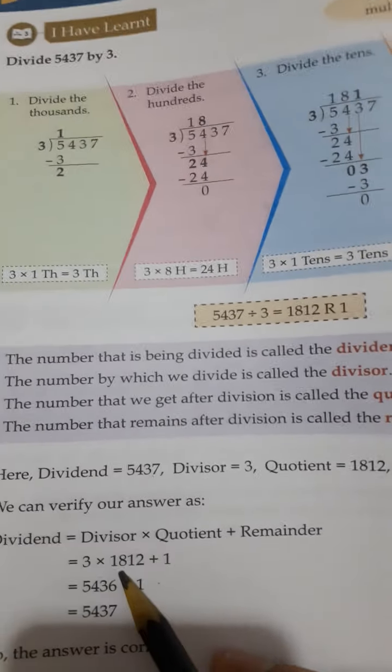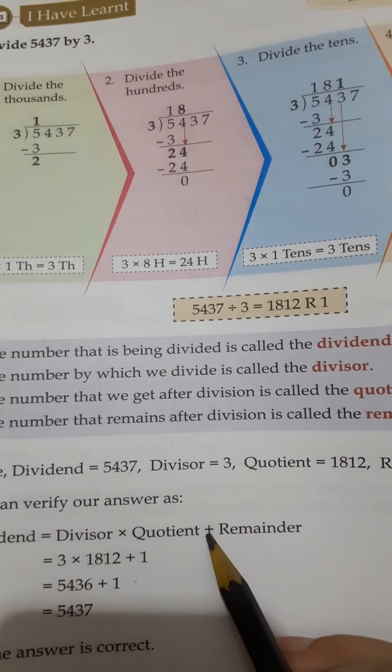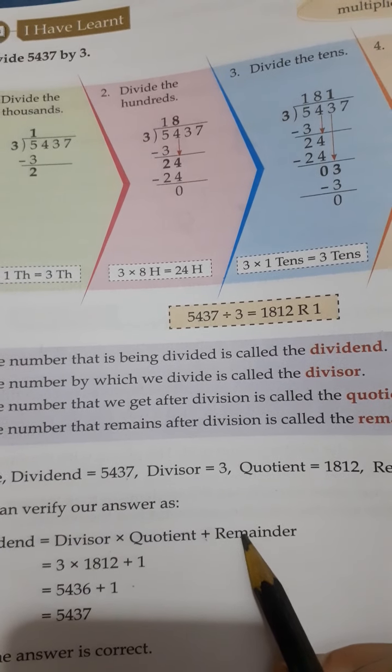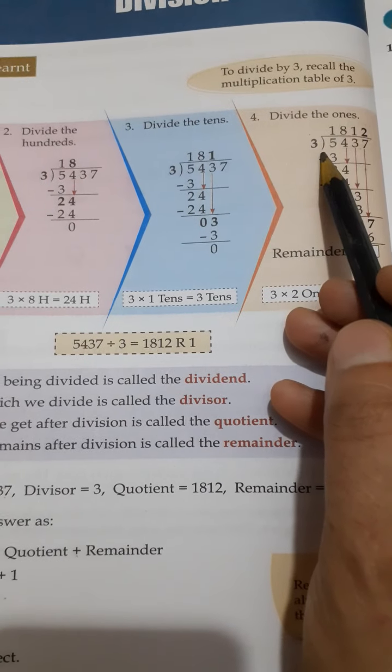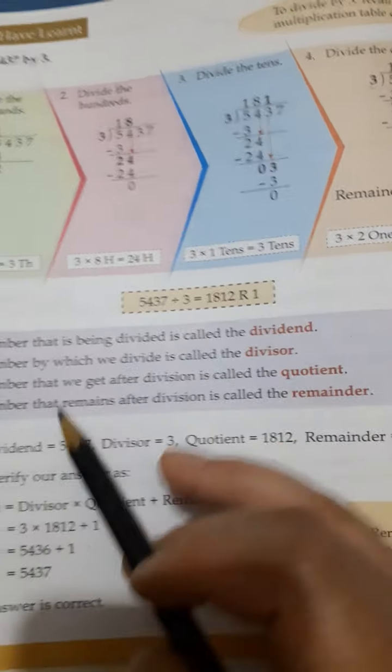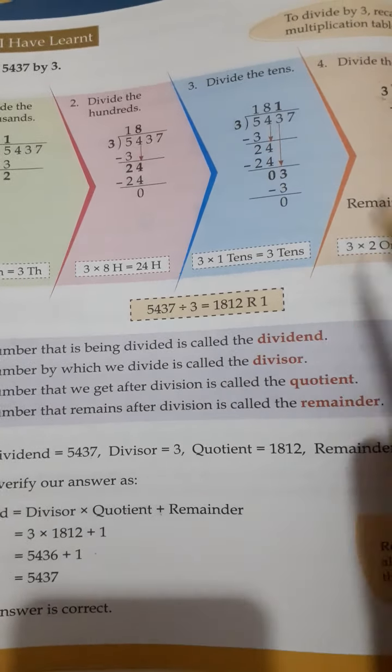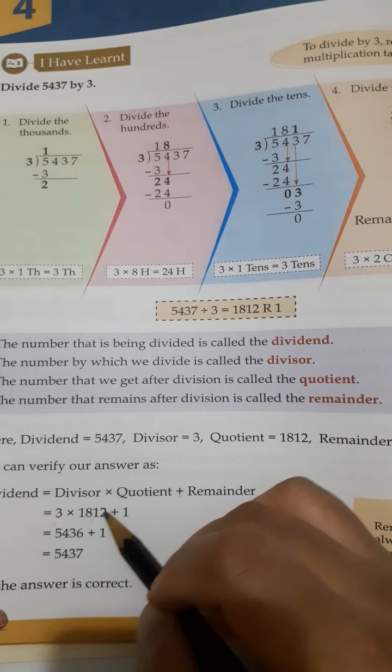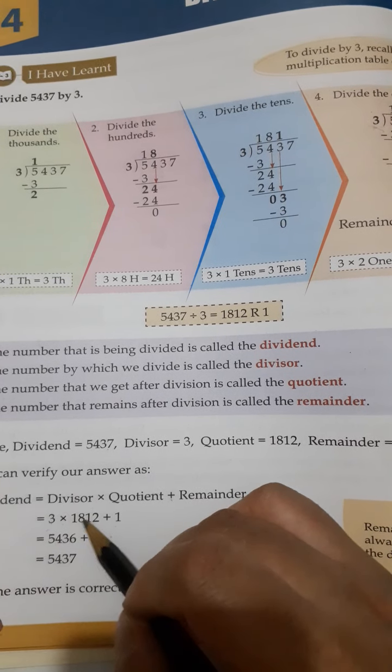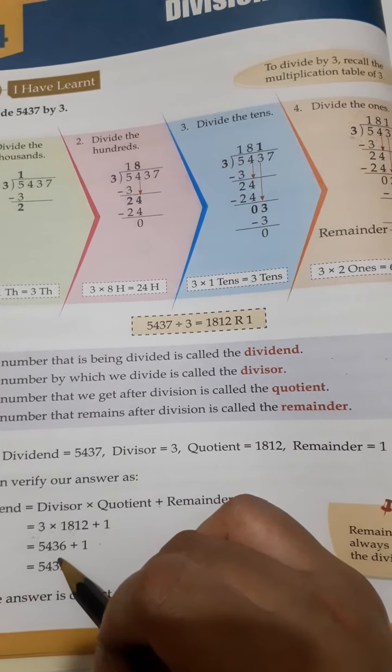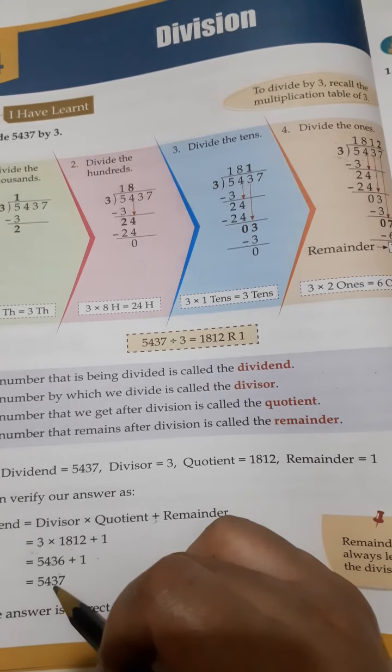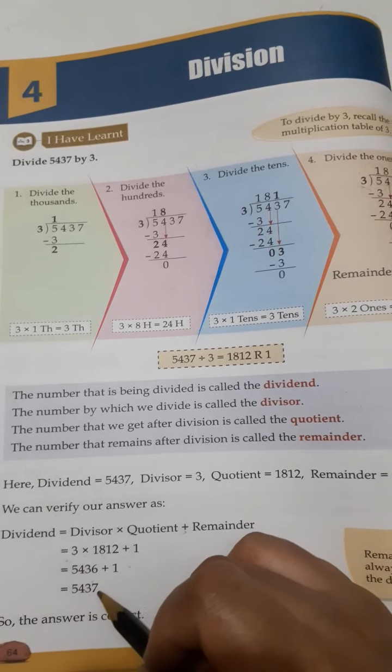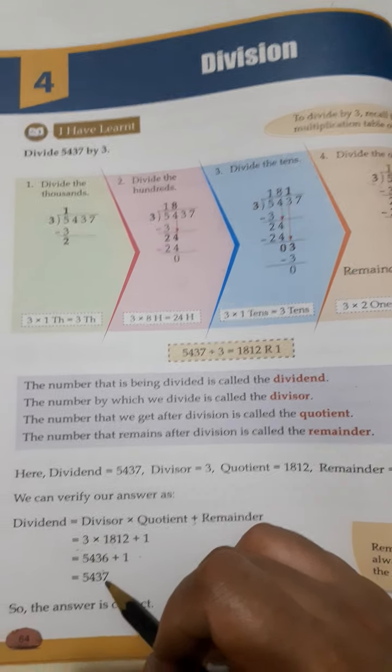When you are checking your answer, you have to put into a formula that is divisor multiply by quotient plus remainder. You are having the divisor 3. As you can see over here, the divisor is 3. You are having quotient as 1812. You just multiply both of them and then add 1. When we are multiplying both of them, we get 5436 and the remainder is 1. So when we are adding this remainder, we got 5437.